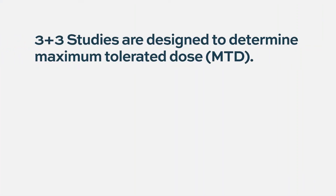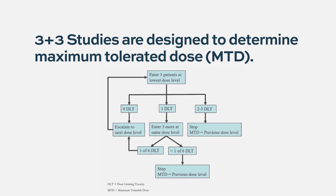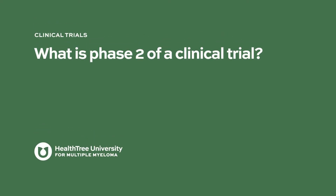What is dose escalation? One of the very common study designs for a phase one trial is what's called a three-plus-three study design. In that particular study design, you're starting off at low doses, making sure it's safe, and then you're increasing the doses as tolerability is confirmed.